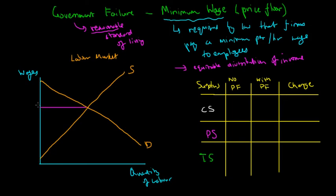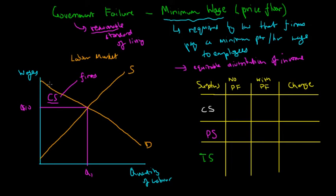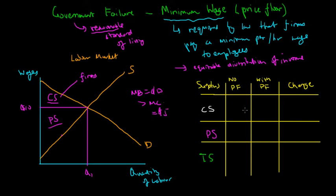Without any regulation or price floor, the market equilibrium for labor would have a wage of ten dollars an hour and a quantity of labor demanded at Q1. The consumer surplus, which represents firms here, covers those willing to hire labor at prices above ten dollars but paying ten. The producer surplus — the people offering their labor — covers those willing to work at, say, five dollars but getting paid ten.